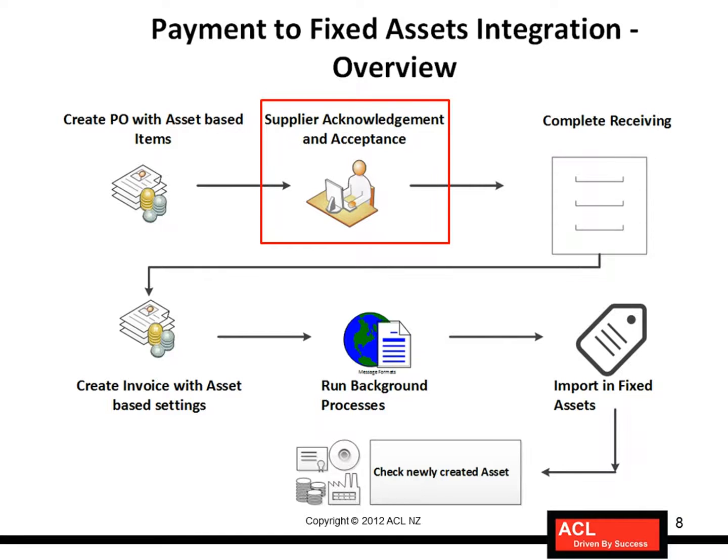The next step is supplier acknowledgement and acceptance. Assuming that this PO has been sent to the supplier and the supplier has accepted it, let's proceed ahead. You have already seen this process many times before in the Payables for Beginners course, so I'm skipping this step.